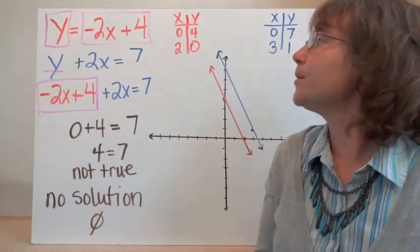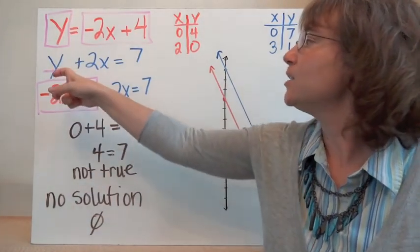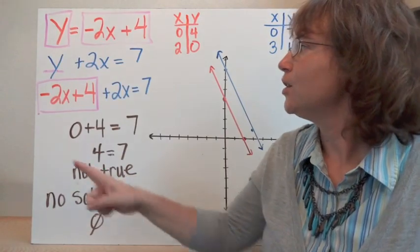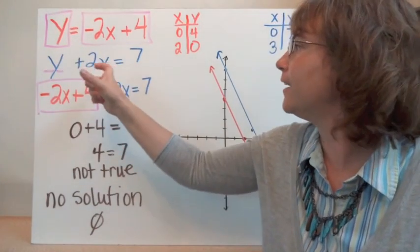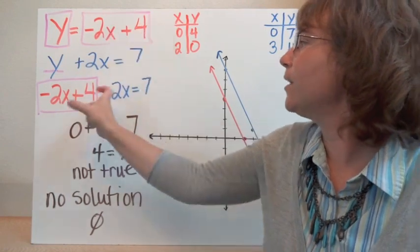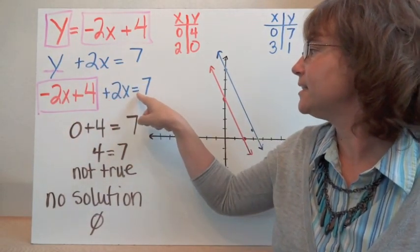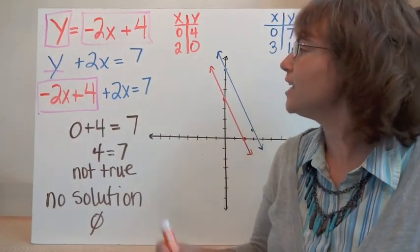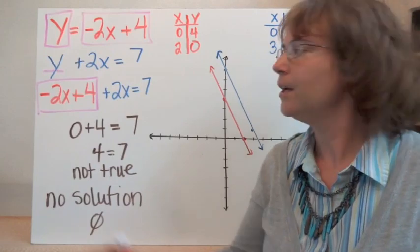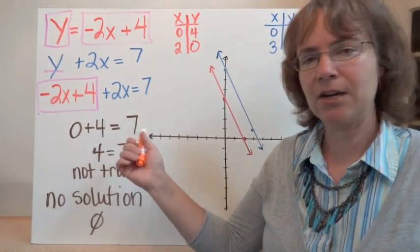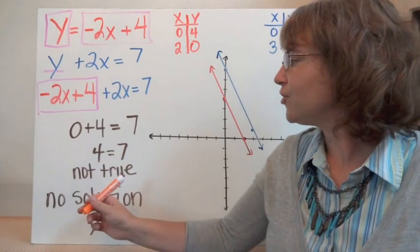Let's look at two more equations: y equals negative 2x plus 4, and y plus 2x equals 7. This second equation is not solved for y. I'm going to use the first one to substitute into the second equation. So instead of y, I'm going to replace it with negative 2x plus 4. So I have negative 2x plus 4 plus 2x equals 7. Negative 2x plus 2x gives me 0, so I get 4 equals 7. That is never true, so there is no solution to this system.